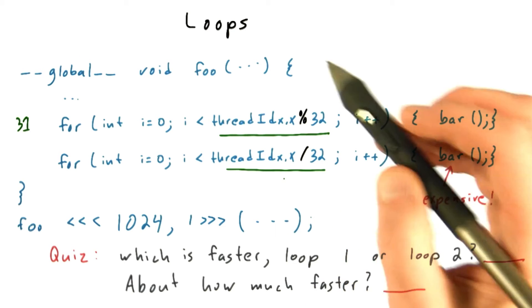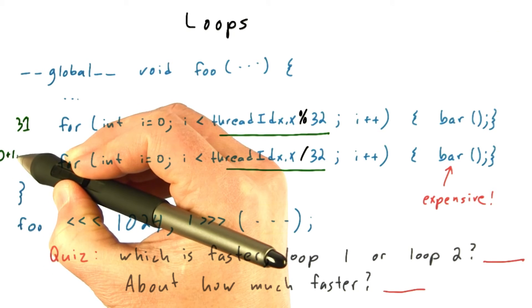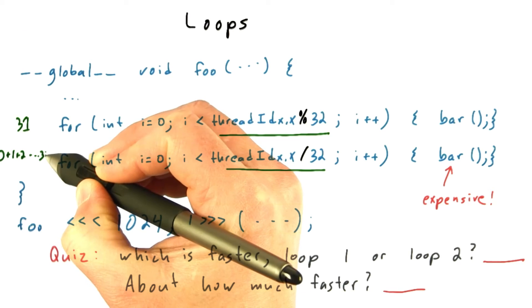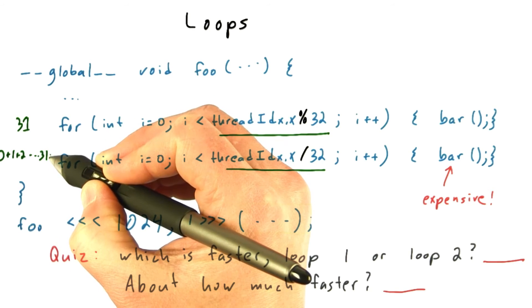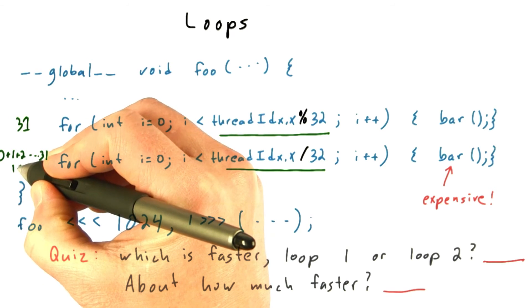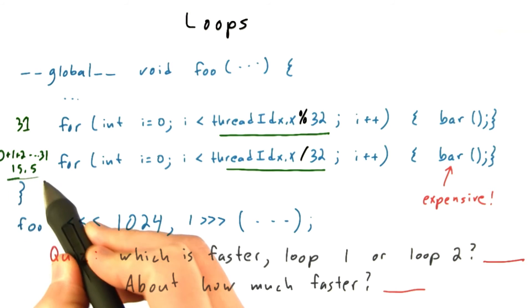So there'll be one warp which evaluates at 0 times, one warp which evaluates at 1 time, one that evaluates at 2 times, and so forth, all the way up to a single warp which evaluates at 31 times. So the average number of times that all of the warps will execute this loop is 15.5.